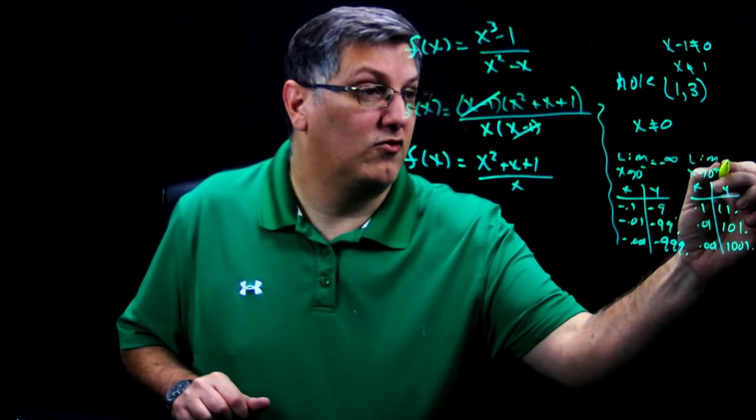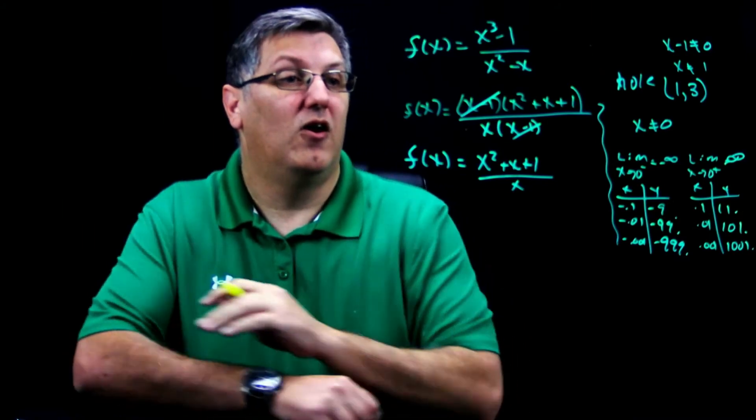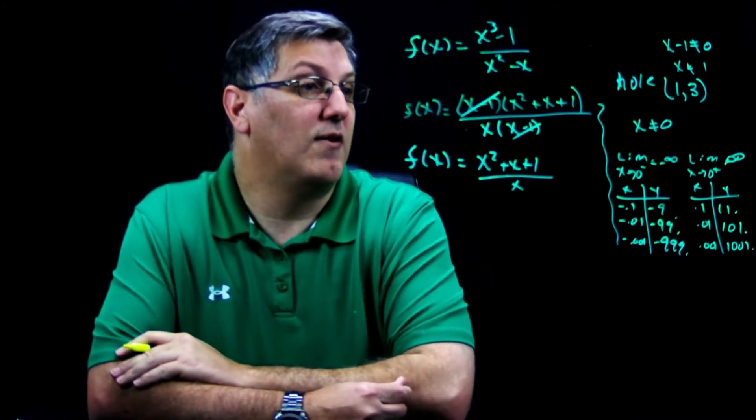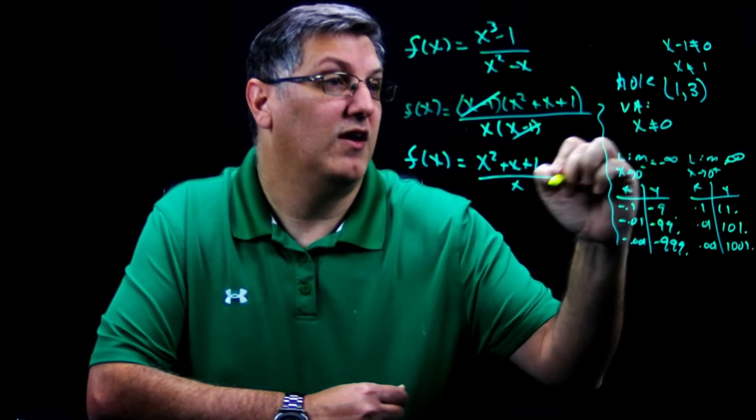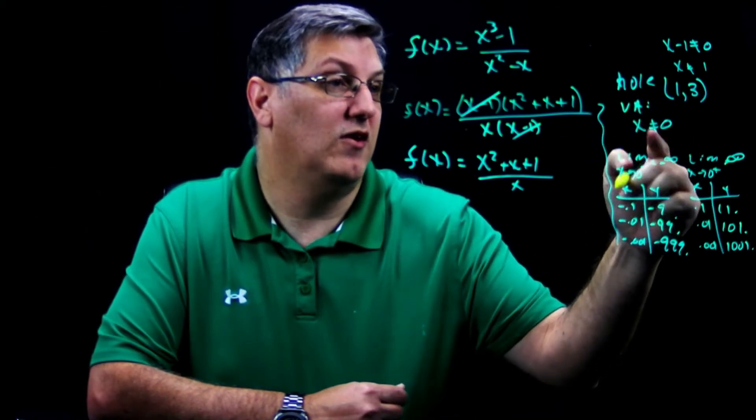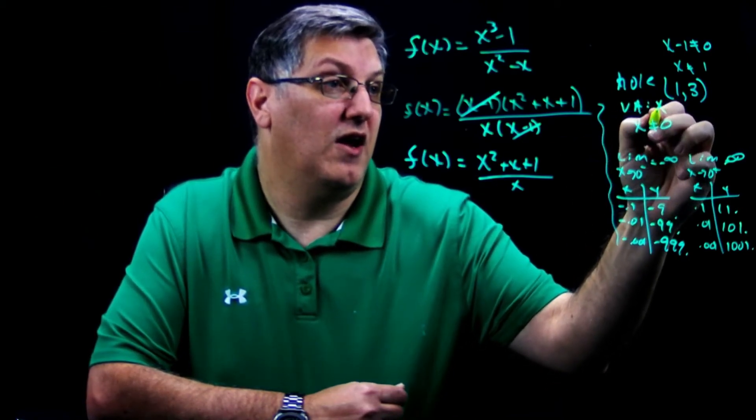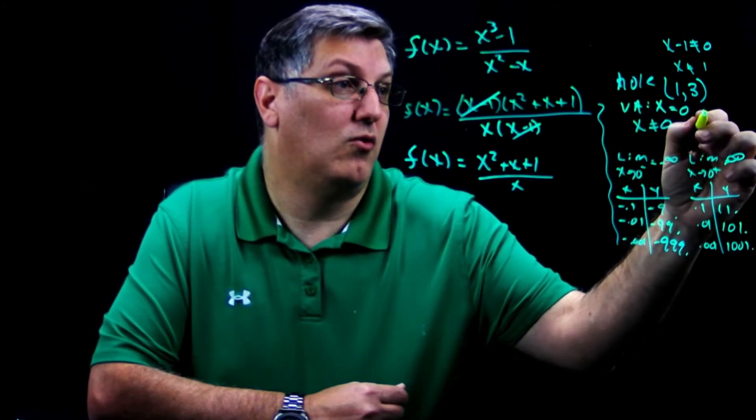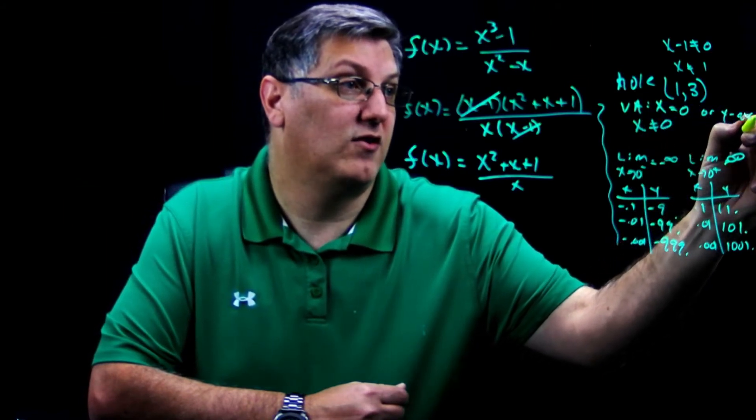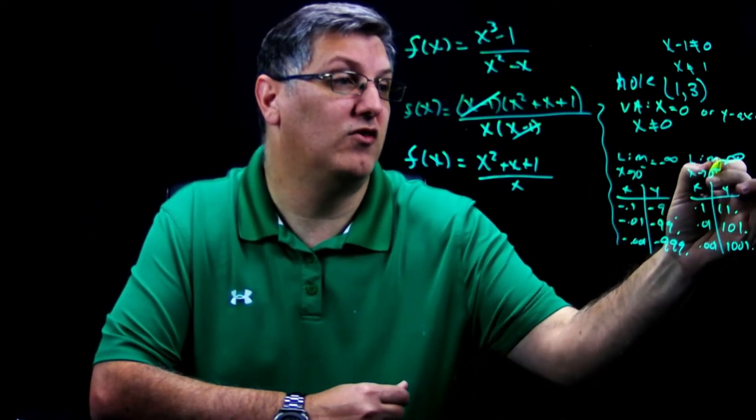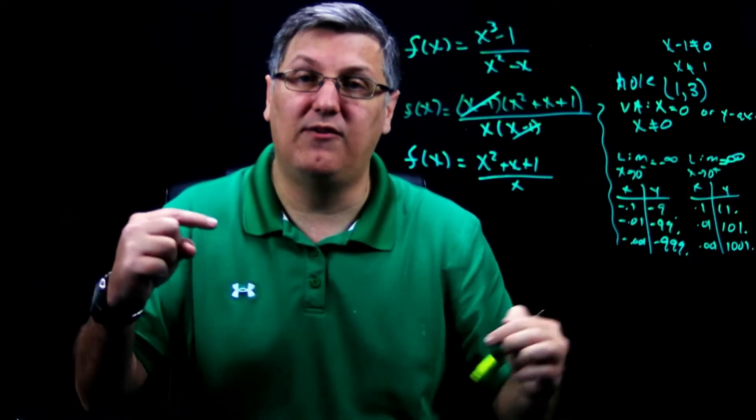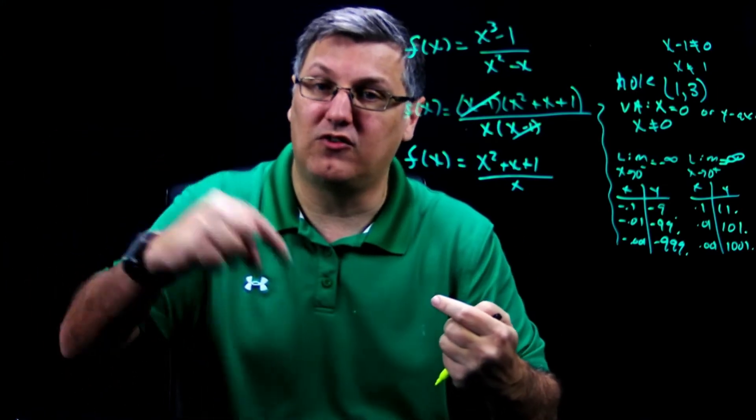So this is going to go to infinity. All right, so I have my vertical asymptote. My vertical asymptote is simply x equals zero, or that's also the y-axis. And I know how the graph is behaving right around zero. As I'm coming from the left and as I come from the left, it's going down. As I'm coming right, it's going up.